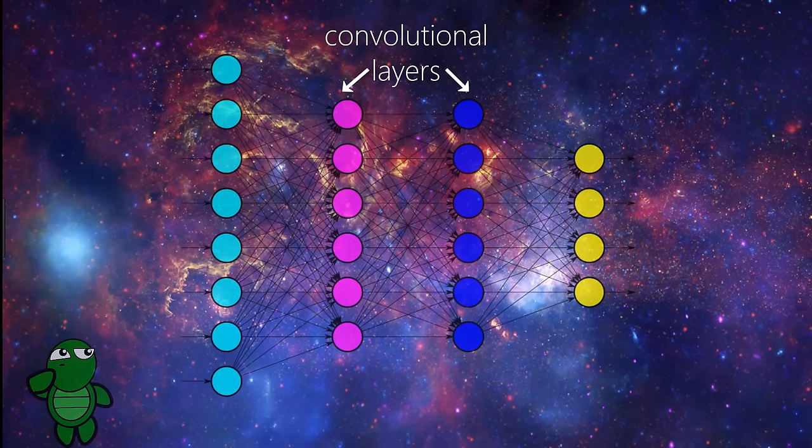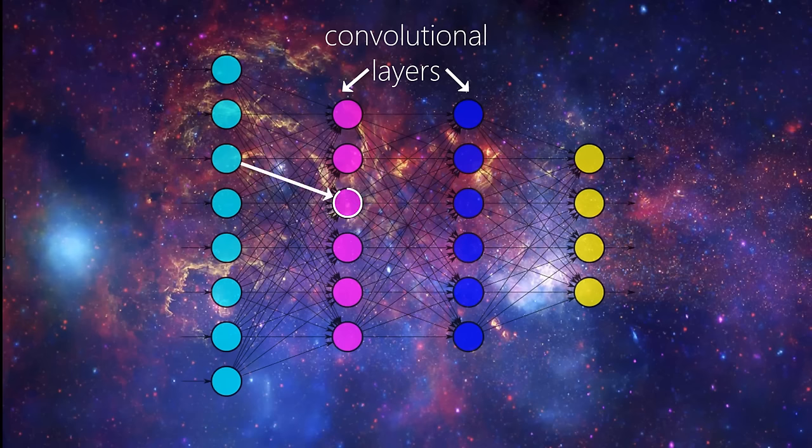Alright, so what do these convolutional layers do? Just like any other layer, a convolutional layer receives input, then transforms the input in some way, and then outputs the transformed input to the next layer. With a convolutional layer, this transformation is a convolution operation. We'll come back to this operation in a bit.